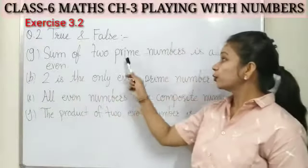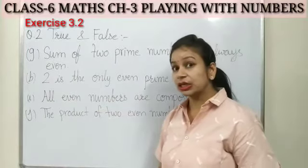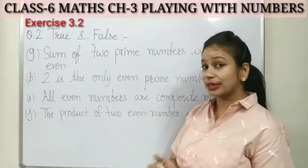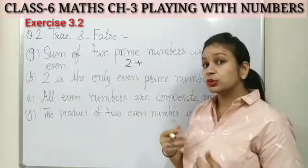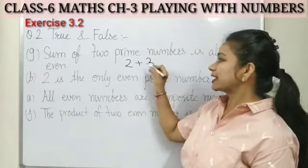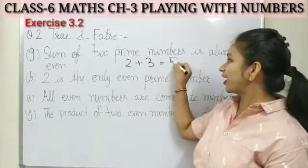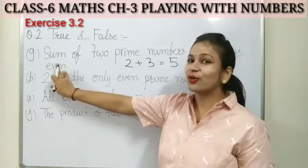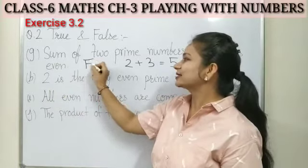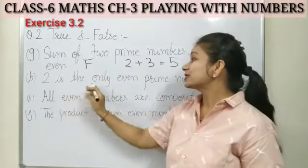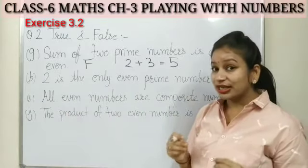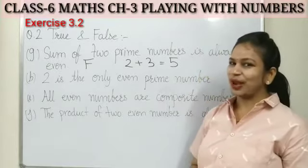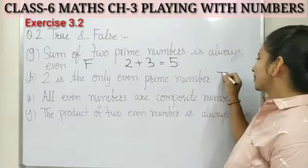Statement G: the sum of two prime numbers is always even. Let's check — the first prime number is two. If we add two to another prime number, say three: two plus three is five, which is an odd number. The statement says always even, so this is wrong — it is a false statement. Statement H: two is the only even prime number. This is right. Only two is an even number that is a prime number with only two factors. This statement is true.